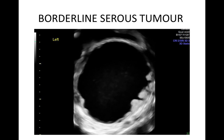Borderline cysts can be unilocular solid or multilocular solid with papillations arising from the capsule. These are especially suspicious if they are numerous and vascular. It is often not possible to distinguish between borderline tumours and early invasive ovarian cancer.